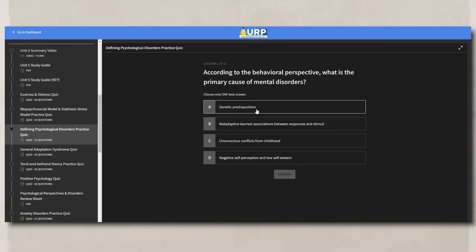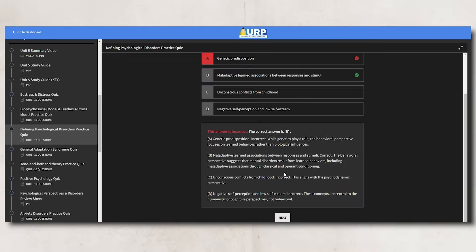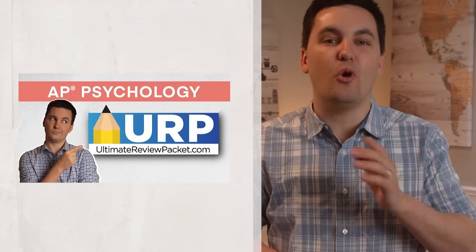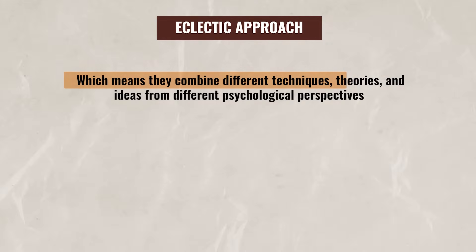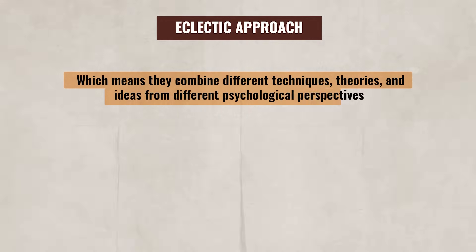Now we're going to talk about how the different psychological perspectives define psychological disorders. Today, most psychologists use an eclectic approach, which means they combine different techniques, theories, and ideas from the different psychological perspectives. Instead of just focusing on one school of thought, this allows them to create a more personalized treatment plan that targets the specific needs of their client.